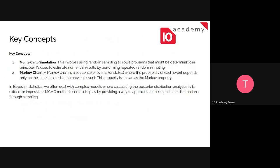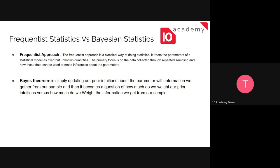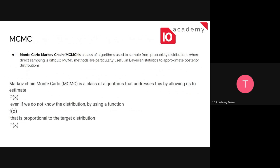Next is Monte Carlo Markov Chain, or MCMC. It is a class of algorithms used to sample from a probability distribution when direct sampling is difficult. There may be situations where directly taking data from a distribution is difficult. MCMC is particularly useful in Bayesian statistics to approximate the posterior distribution, which is the end result of Bayesian inference.